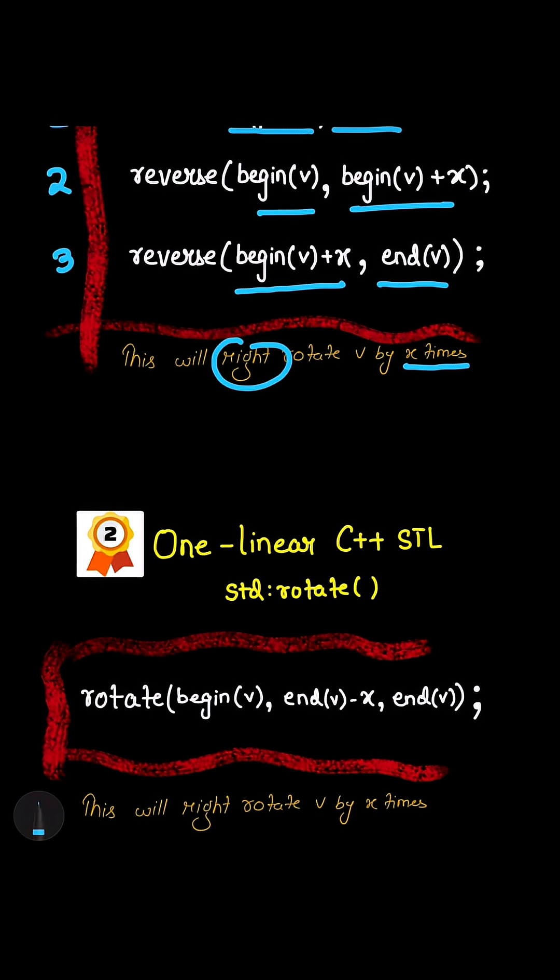So this is the format for rotating a vector right by x times. And if you want to rotate it left by x times, then instead of this minus one you just simply replace it with plus.